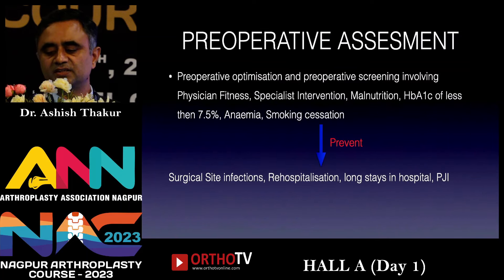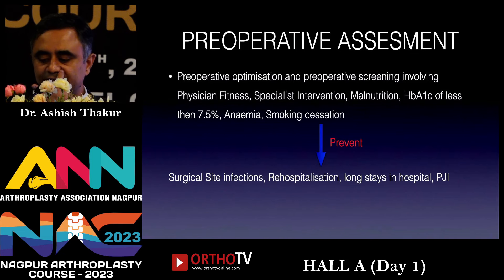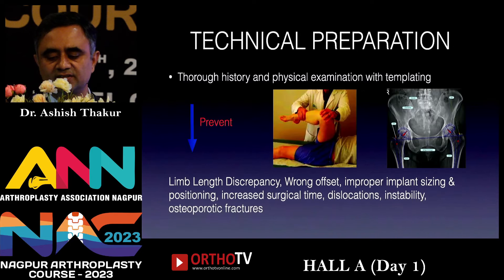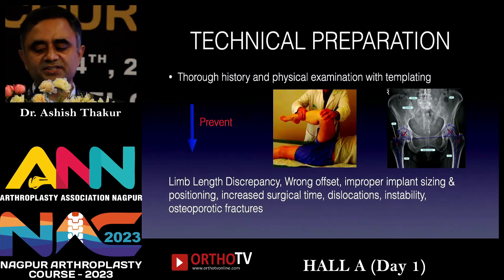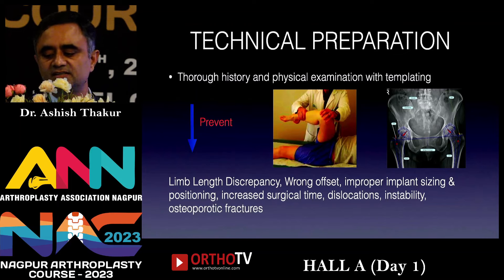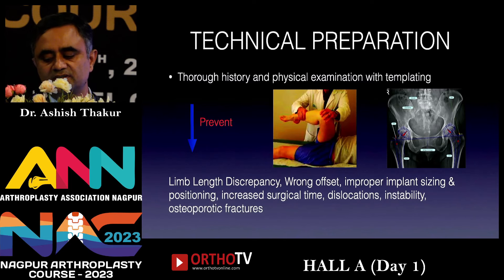Preoperative optimization and assessment is the most important step in THR or any other surgery. You have to follow all guidelines to make your patient fit, and missing any of these may lead to increased chances of complications like surgical site infections, PJIs, and rehospitalizations. Technical preparation is also critical — missing details in history and physical examination such as a previous surgery or scar, previous fracture, or associated comorbidities can unnecessarily increase your postoperative complication rate. Templating and proper planning helps avoid complications like limb length discrepancies and wrong offsets.